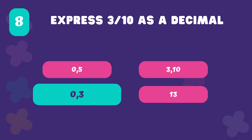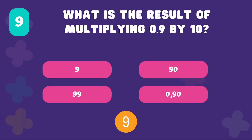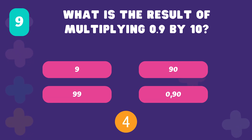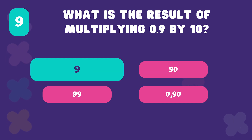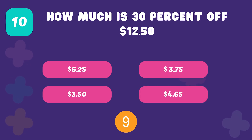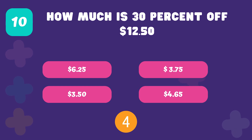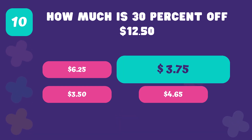0.3. Multiplying 0.9 by 10 equals 9. 30% of 12.50 — the result is 3.75.